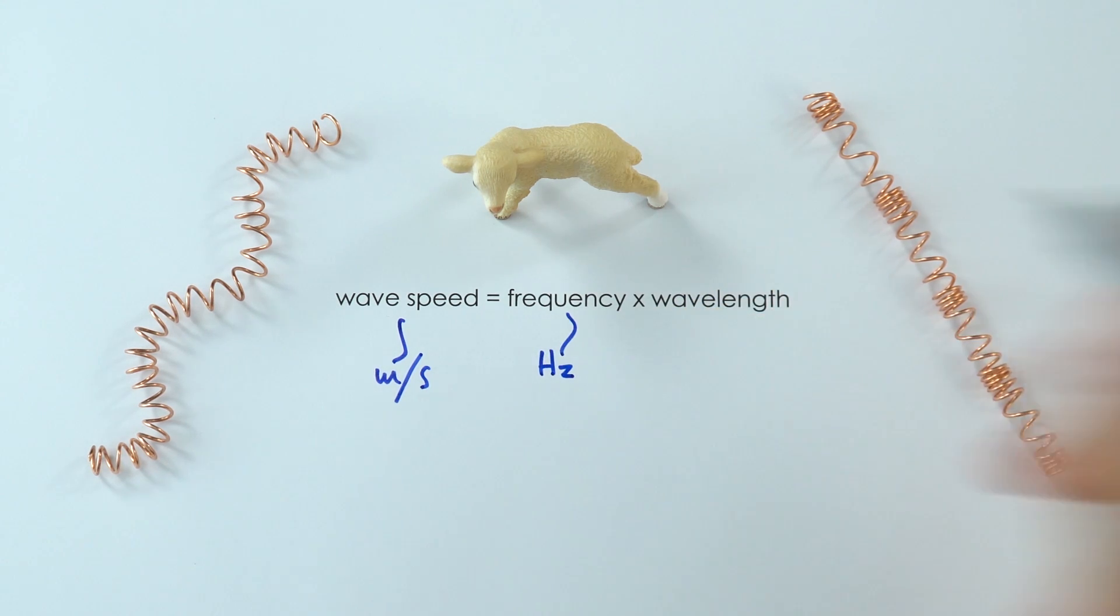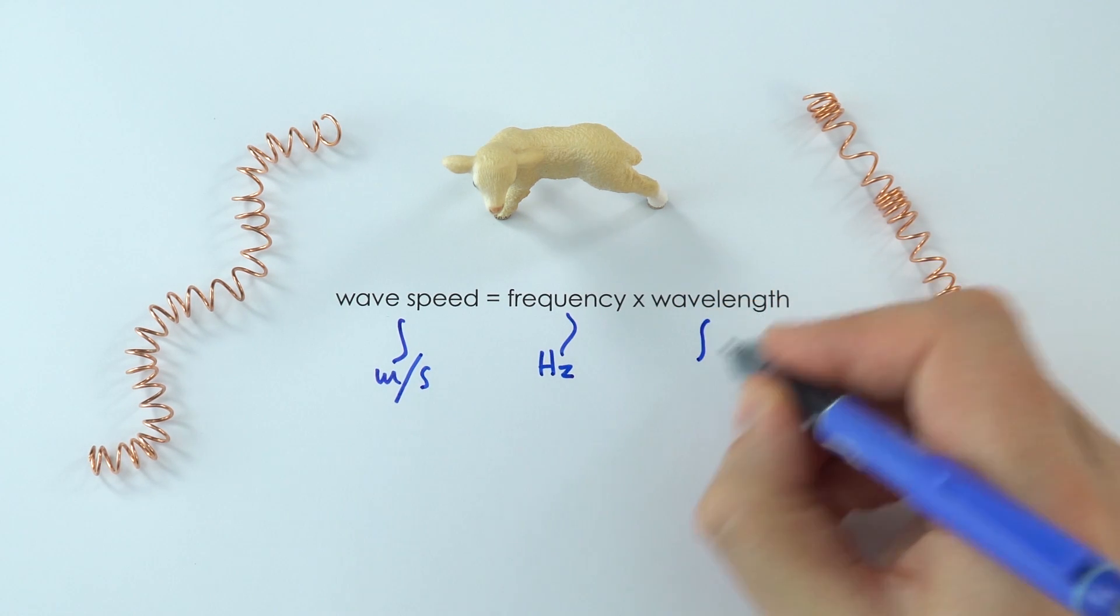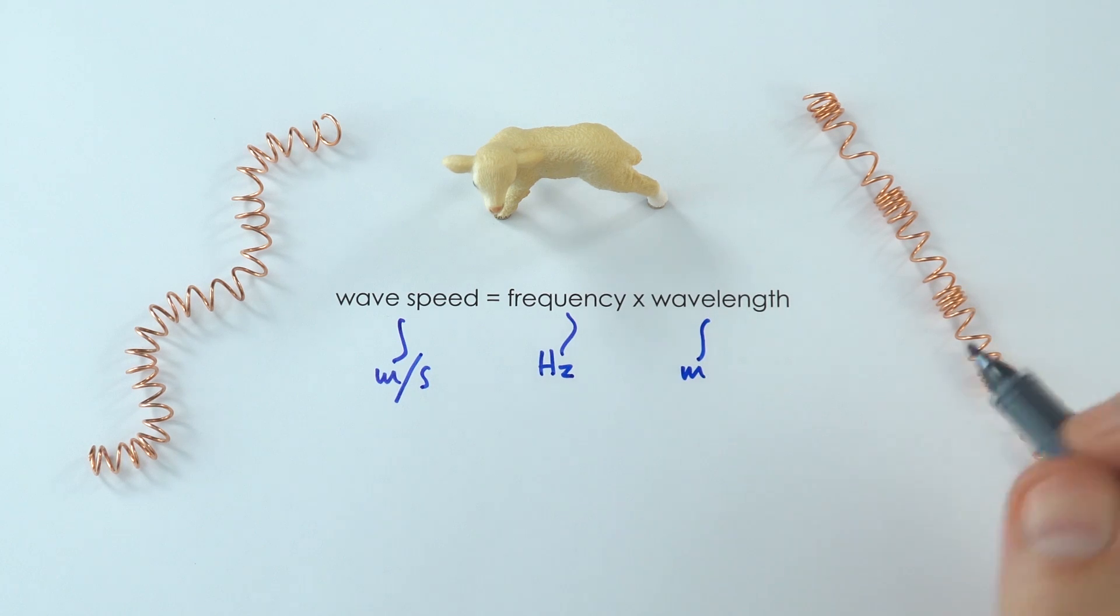So capital H, lowercase z. And then the wavelength, because it's just a length, is simply measured in meters.